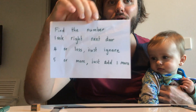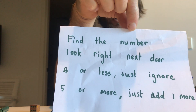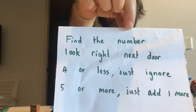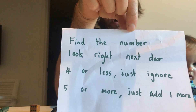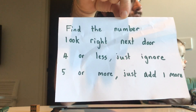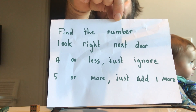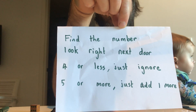This morning's activity is looking at rounding and a little bit of place value, because you're identifying numbers. The first thing I want to show you is a poem so you can remember how to round. Find the number, look right next door. Four or less — ignore. Five or more — add one more. So anything from five and above you round up, and anything from four and down you round down.